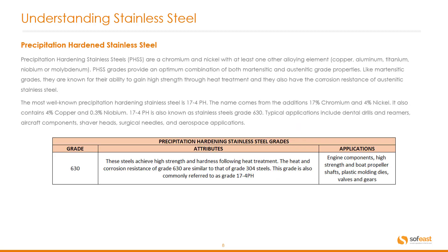Precipitation hardening stainless steels, or PH SS for short, are a chromium and nickel alloy with at least one other alloying element such as copper, aluminium, titanium, niobium, and molybdenum. PH SS grades provide an optimum combination of both martensitic and austenitic grade properties. Like martensitic grades, they are known for their ability to gain high strength through heat treatment, and they also have the corrosion resistance of austenitic stainless steel.